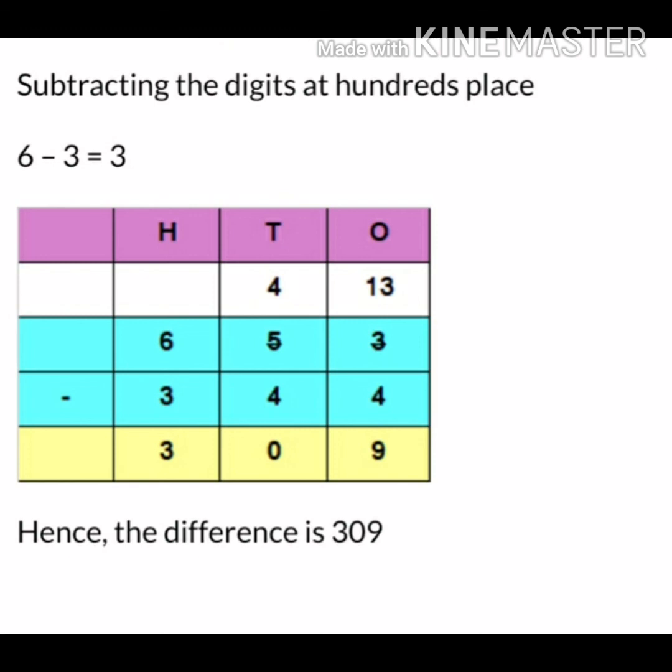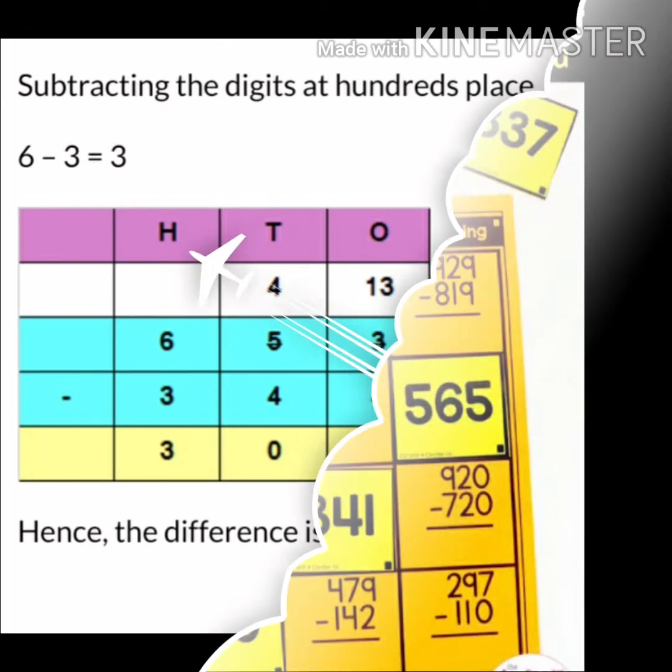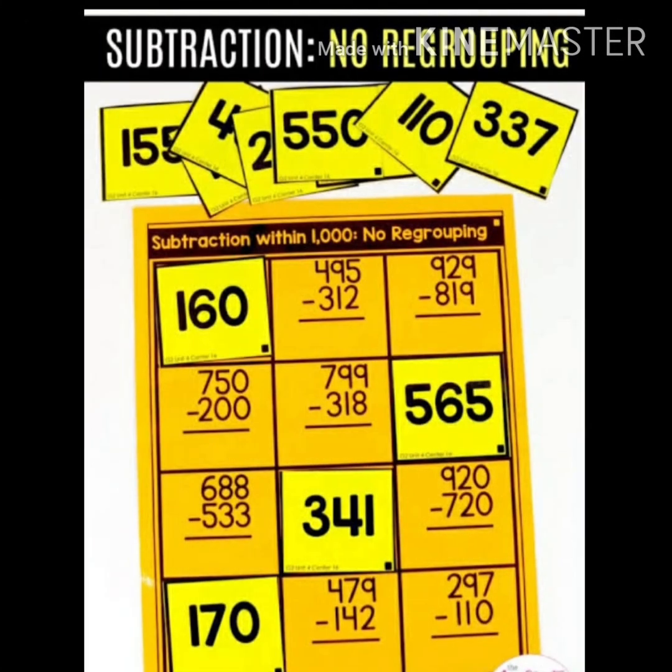So kids, as you know that 653 minus 344 gives you the difference of 309. It's very easy. I hope I made you understand how to do the subtraction with grouping and without grouping. Kids, you need to just practice more and more and you just have to play with numbers.